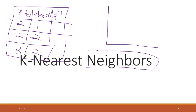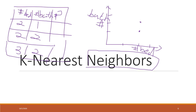First we are going to define the neighbors. We put the two independent variables into a two-dimensional chart. Here this is the number of bedrooms and this is the number of bathrooms. Now we have three sample points: the first one is two bedrooms by one bathroom, the second point is two bedrooms by two bathrooms, and the third point is three bedrooms and two bathrooms.